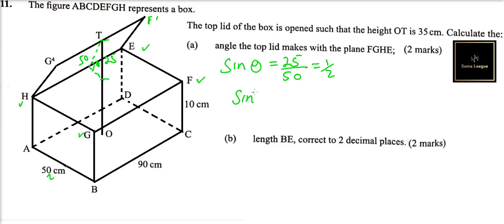If we get the sine inverse of a half, which you can get directly from your calculator, that is you type 0.5, you press inverse and then sine, that will give you 30 degrees. So the angle between the two planes is 30 degrees.